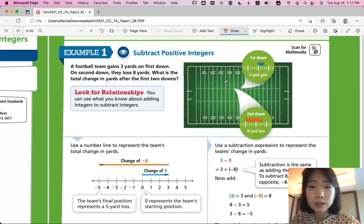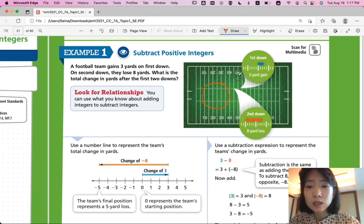It seems like in the picture, they're from here. So from the middle, they gain 3 yards. But then second down, from here, they lose 8 yards. So they lose more than they gained.